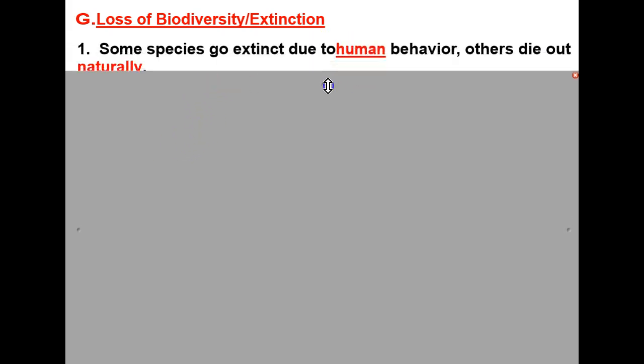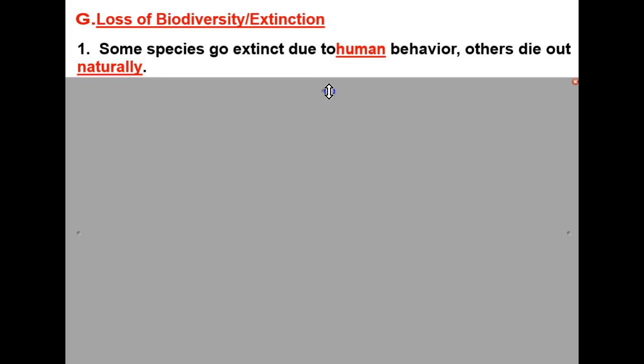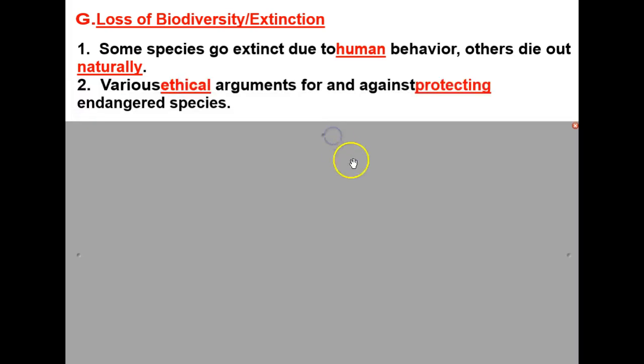We're going to wrap up by taking a look at the negative impact of human behavior with regard to loss of biodiversity and extinction. Some species go extinct due to human behavior, while others die out naturally. There are various ethical arguments for and against protecting endangered species. That covers our brief introduction on human impact in the biosphere, with much more to come as we discuss questions, problems, and human populations in class.